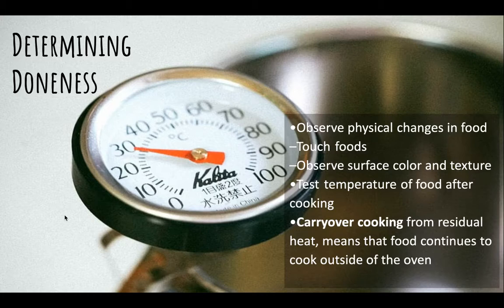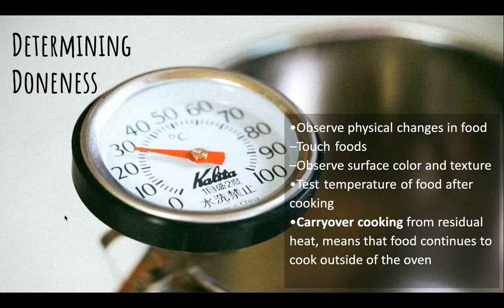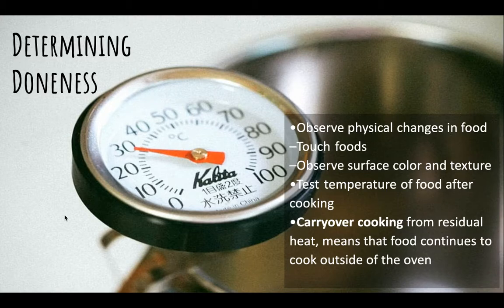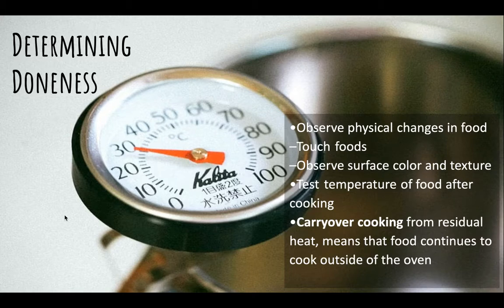There's also carryover cooking to consider. With a large item like a Thanksgiving turkey, if you pull it at its ideal temperature of 165°F, the absorbed heat will continue cooking it after removal from the oven — potentially overcooking it as it rests. The idea is to pull large pieces of meat 5 to 10 degrees before your final target temperature, allowing carryover cooking to bring it to the correct temperature. The larger the item, the more carryover cooking occurs.